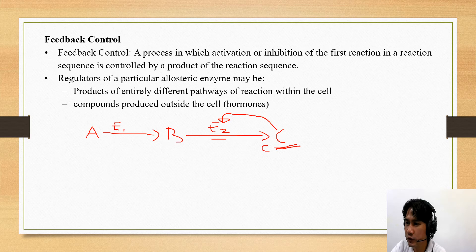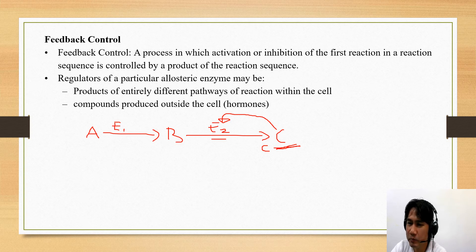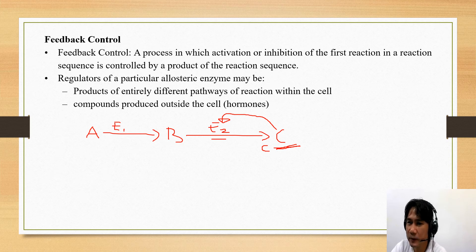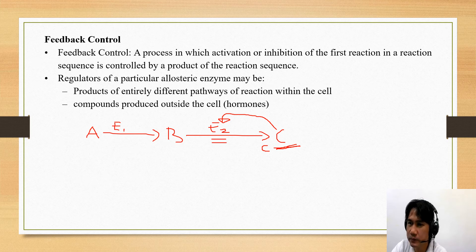Regulators at a particular enzyme may be products of an entirely different pathway of reaction within the cell or compounds produced outside the cell. These regulators can, in some way or another, activate or inhibit these enzymes by slowing down or increasing their activity.